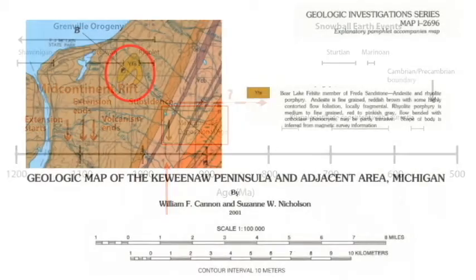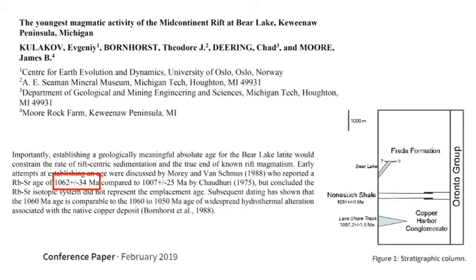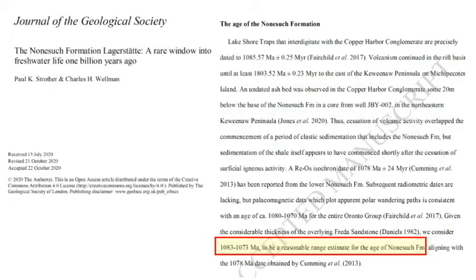We do have one intrusion into the Frida that we know of, up on the Keweenaw. It's called the Bear Lake Stock, the Bear Lake Rhyolite, or the Bear Lake Felsite, depending on who's writing the paper. It is definitely an intrusion of a fine-grained felsic rock like a rhyolite. That has been dated to about 1.06 billion years old, but the margin of error is huge — over 30 million years. So that intrusion could be anywhere between 1.09 and 1.03 billion years old. We already know the Frida is not older than 1.08 billion because of the age of the underlying Nonesuch. So that's too big to work with; we need to narrow this down.